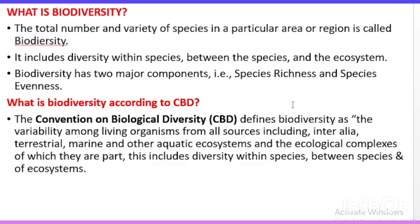The first major component is species richness. Species richness is the species diversity within a community, and it has three types: alpha, beta, and gamma diversity.